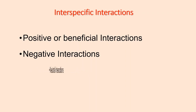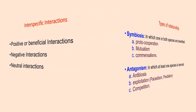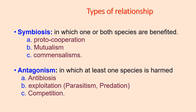The third category is neutral interactions, in which neither of the two species is benefited nor harmed. Positive or beneficial interactions are also known as symbiosis, in which one or both species are benefited. These are further divided into proto-cooperation, mutualism, and commensalism. Antagonism or negative interactions are further divided into antibiosis, exploitation, and competition. Exploitation is again subdivided into parasitism and predation.